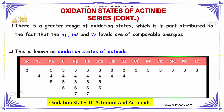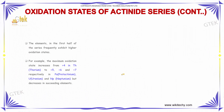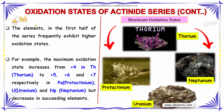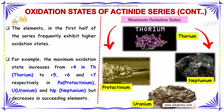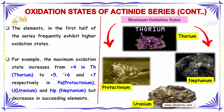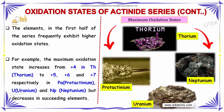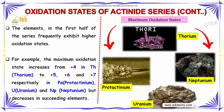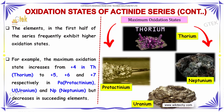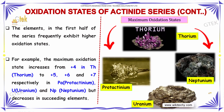The elements in the first half of the series frequently exhibit higher oxidation states. For example, the maximum oxidation state increases from +4 in thorium to +5, +6, and +7 respectively in protactinium, uranium, and neptunium, but decreases in the succeeding elements.